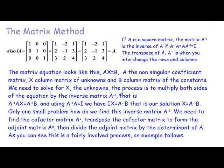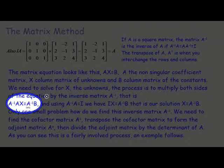We'll go through this procedure with an example in a minute, but basically the process is: multiply both sides of the equation by the inverse matrix A to the minus one. So A⁻¹ times A times X equals A⁻¹ times B. We use the fact that A⁻¹ times A equals the identity matrix I, and I times X is just X itself. Therefore the solution is X equals A⁻¹ times B.